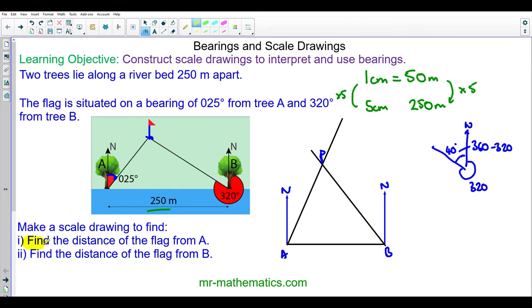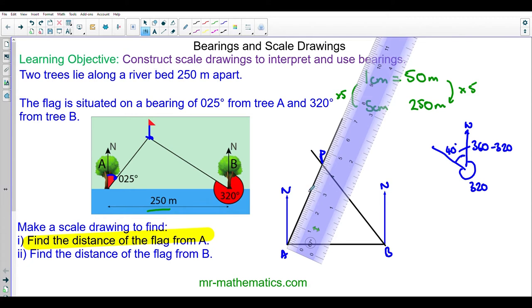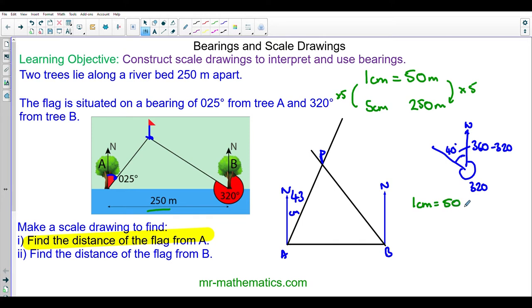Now we can use the scale drawing to find the distance of the flag from A. To do this we'll use our ruler. You can see this is 4.3 centimeters on our scale. We know that one centimeter equals 50 meters. So 4.3 centimeters, we'll multiply both sides by 4.3 to keep the scale balanced. The distance in real life will be 50 multiplied by 4.3 which is 215 meters.